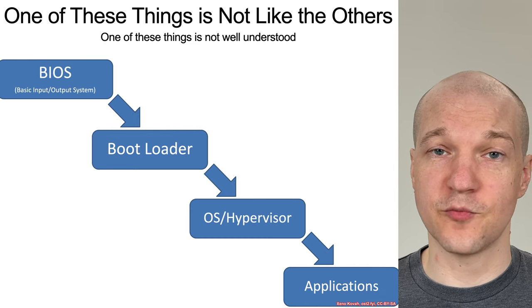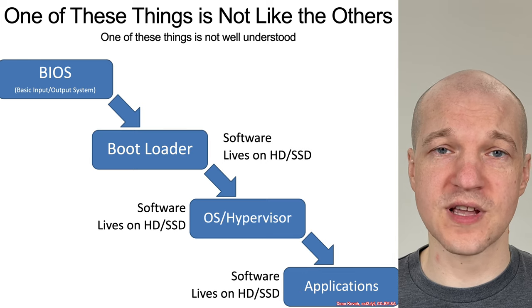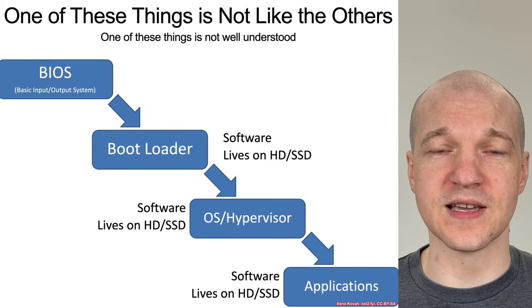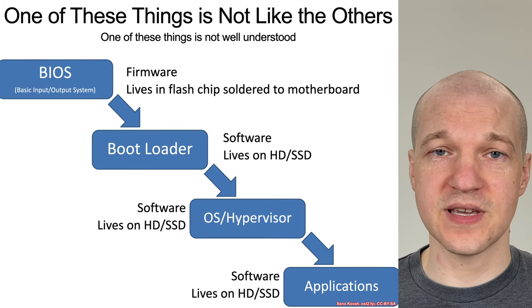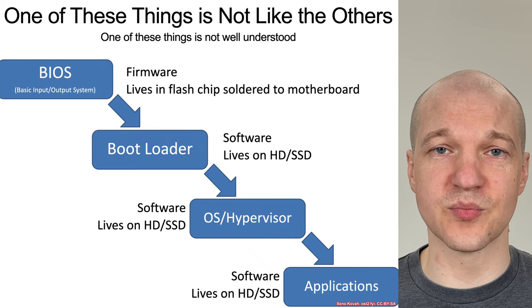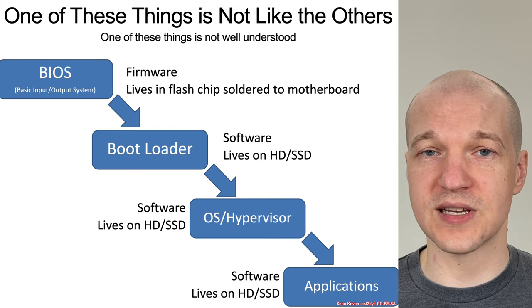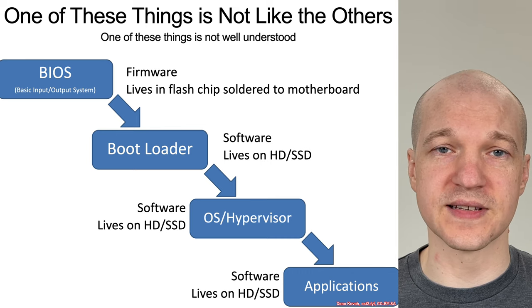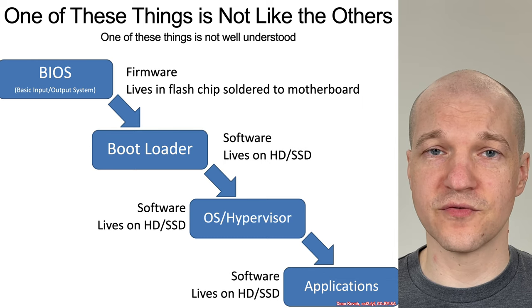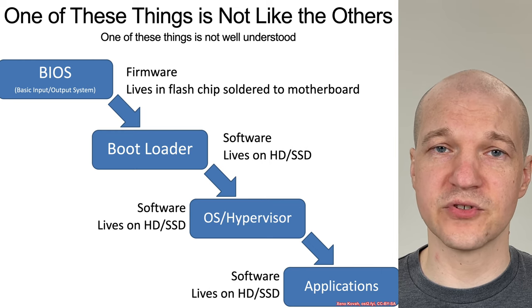When it comes to detecting malicious software, one of these things is not like the other. Applications, operating systems, hypervisors, and even bootloaders are all normal software that runs and lives on a hard drive or SSD. On the other hand, firmware is typically stored in a non-volatile flash memory on a motherboard, soldered down to some circuit board. So even trying to detect this software — you can't find it through hard drive forensics. As of today, robust software to do firmware forensics is very much in its infancy, and very often companies don't have good options to detect it.